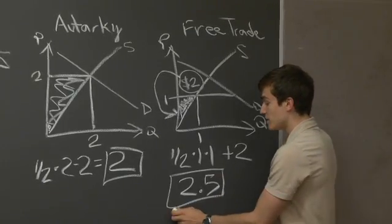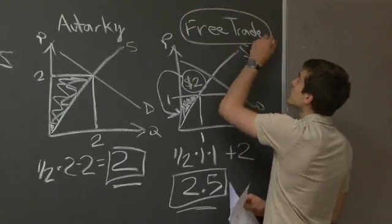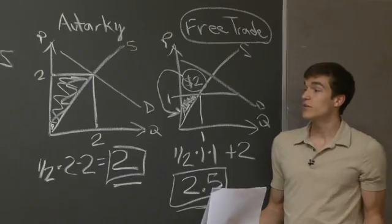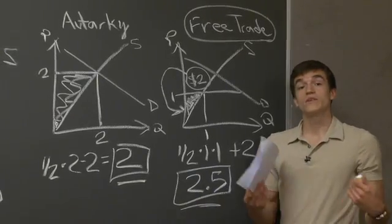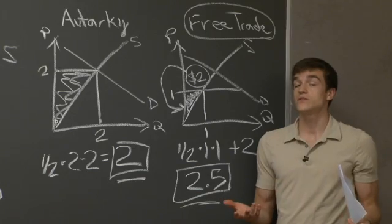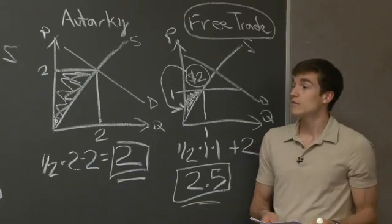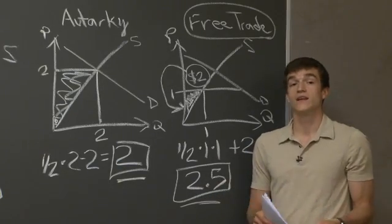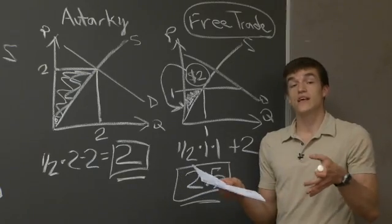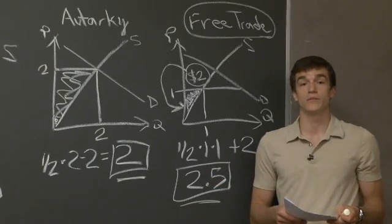Since the producer surplus increased to 2.5 from 2, we can say that producers are better off under the free trade system — with the caveat that they're receiving the government tax rebate. To summarize: we first looked at the autarkic situation with no free trade, then saw how producers and consumers are affected when borders open to free trade without government intervention, then examined what happens when the government taxes the benefiting group and rebates revenue to the harmed group. The producers' surplus is higher with the rebate than under autarky.